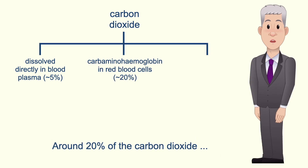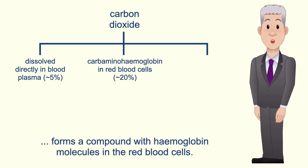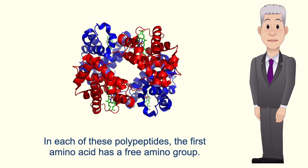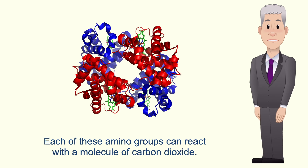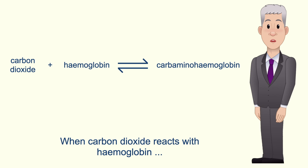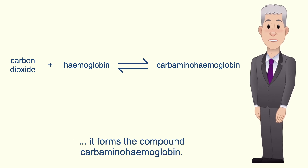Around 20% of the carbon dioxide forms a compound with hemoglobin molecules in the red blood cells. Hemoglobin contains four polypeptide chains, and in each of these polypeptides the first amino acid has a free amino group. Each of these amino groups can react with a molecule of carbon dioxide, so one molecule of hemoglobin can react with four molecules of carbon dioxide.